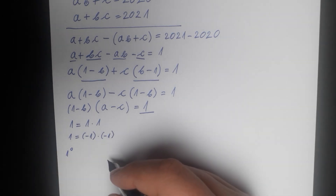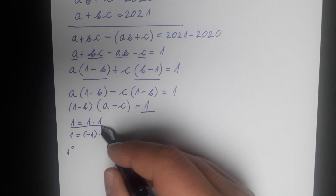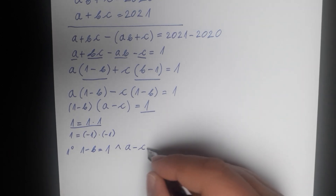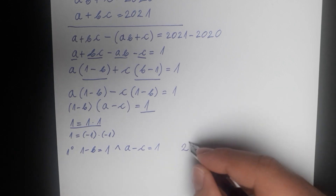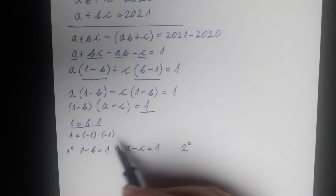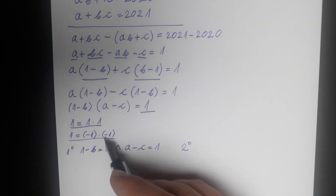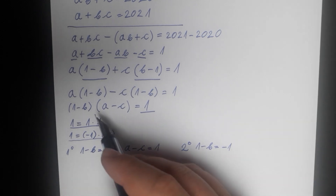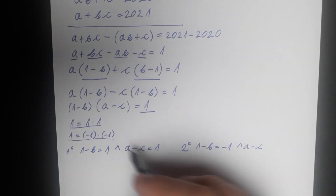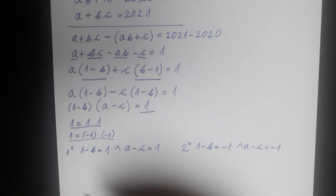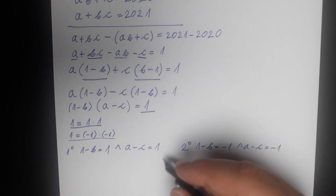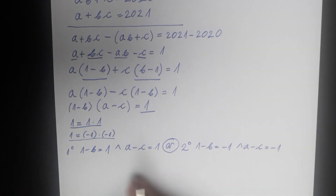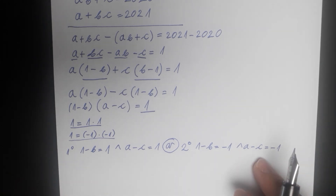For Case 1, we write 1 as 1 times 1, so (1 minus b) equals 1 and (a minus c) equals 1. For Case 2, we write 1 as negative 1 times negative 1, so (1 minus b) equals negative 1 and (a minus c) equals negative 1. Between the first and second case we have the connector OR, so we take the union of the solutions from each case.